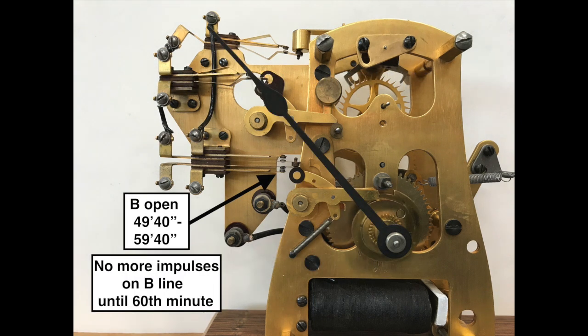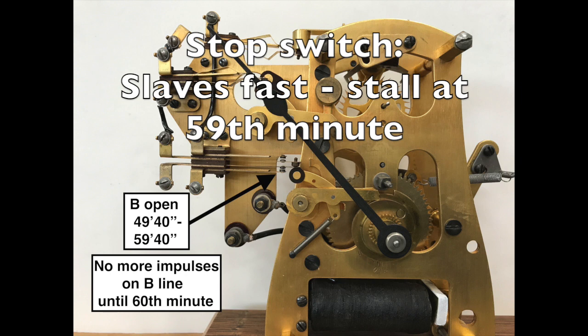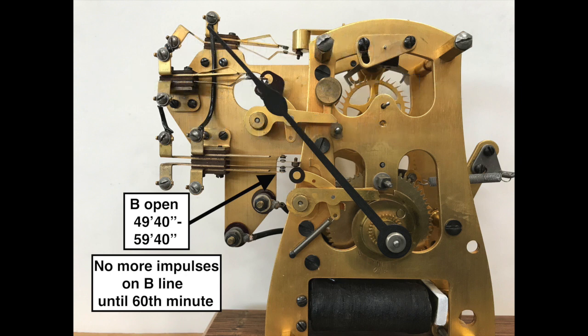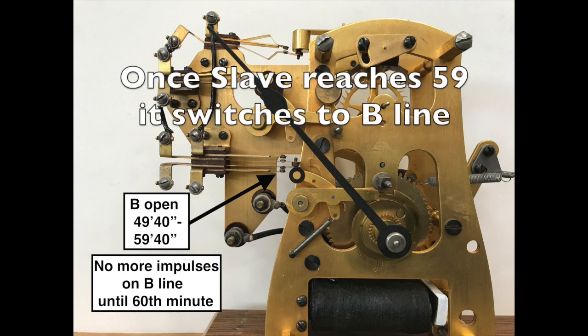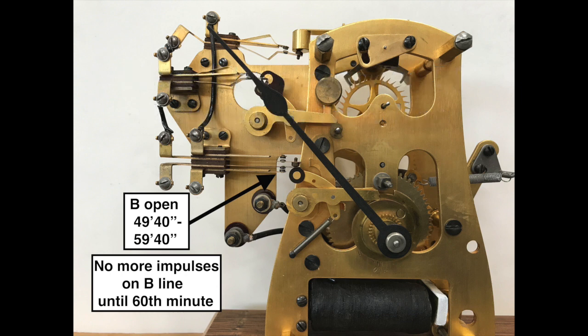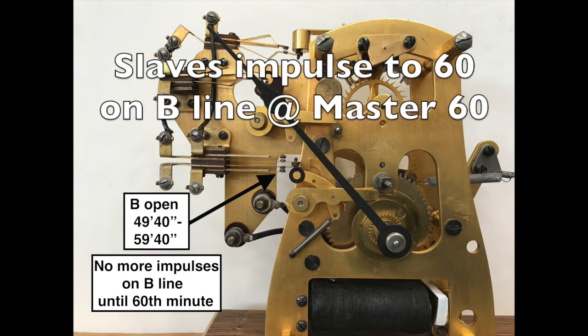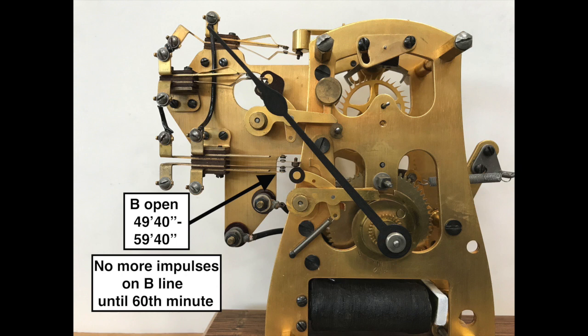The stop switch opens the B line from 49.40 to 59.40. This is when slaves up to 10 minutes fast are held back at the 59th minute. Once a slave reaches 59, it switches to the B line. Fast slaves reach 59 early and stall.